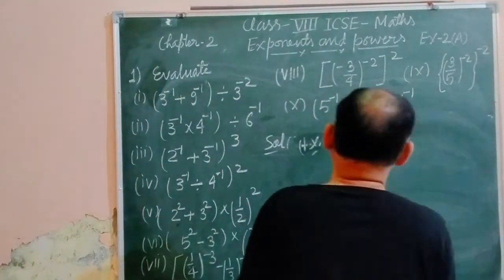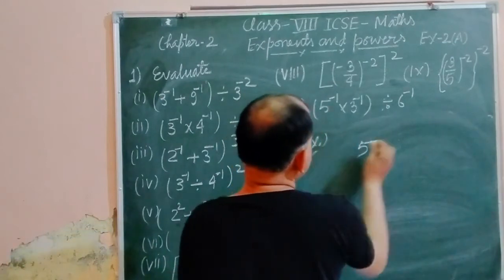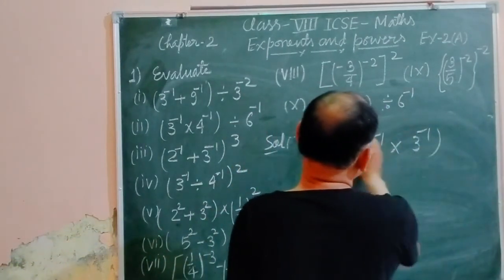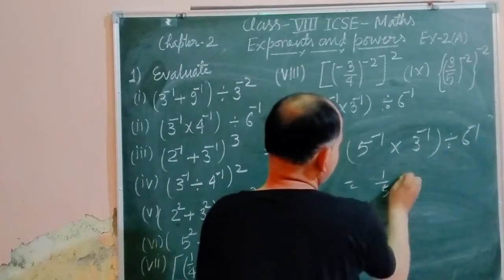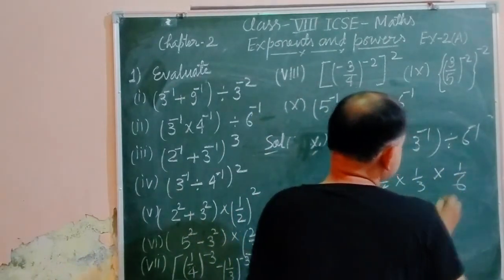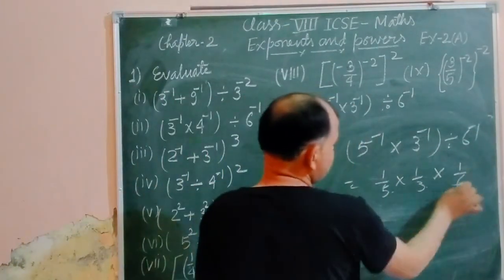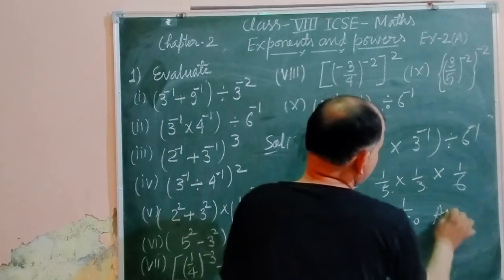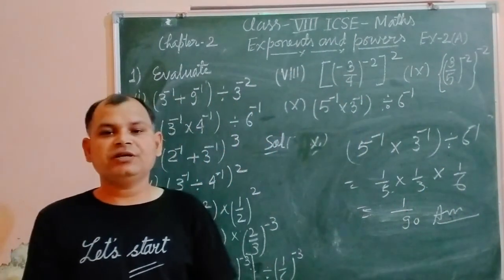The last part: (5 to the power minus 1 times 3 to the power minus 1) divided by 6 to the power minus 1. This is 1/5 times 1/3 divided by 1/6, which equals 1/15 times 6 = 6/15 = 2/5. So the answer is 2/5. I hope you got it — thanks for watching.